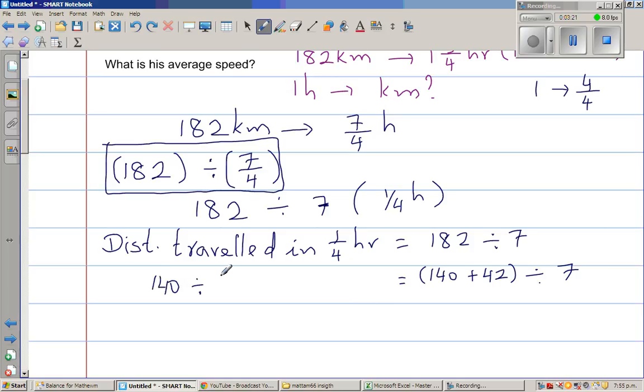So I will do the side. So 180 divided by seven. I know 14 divided by seven is two. 140 divided by seven is 20. And then I have to divide 42 by seven, which is six. So this is nothing but 26. So in other words, distance traveled in a quarter hour is 26 kilometers.